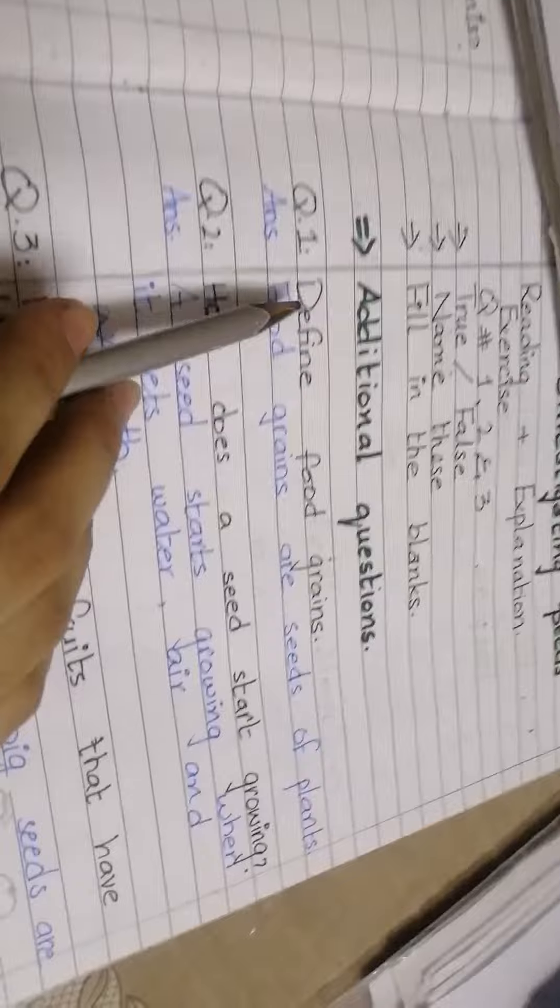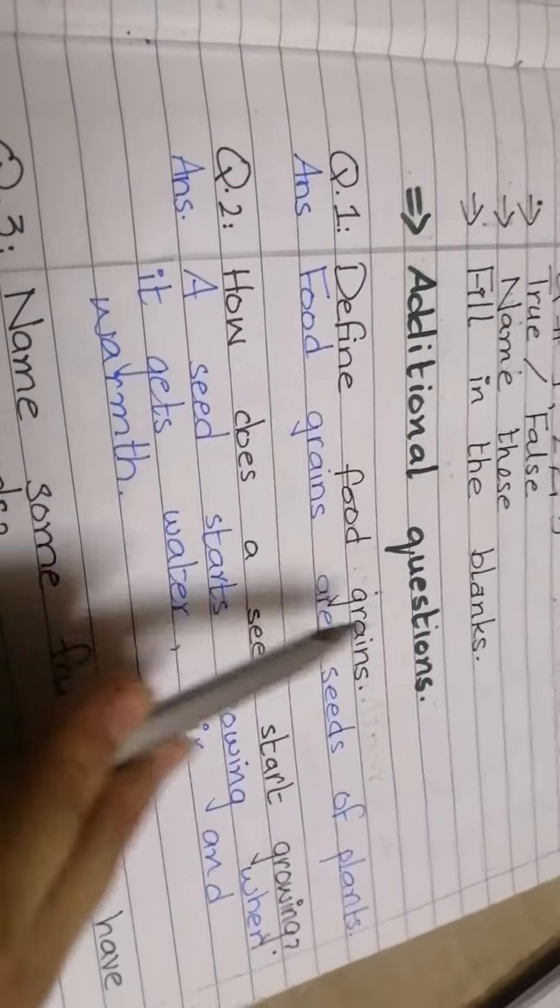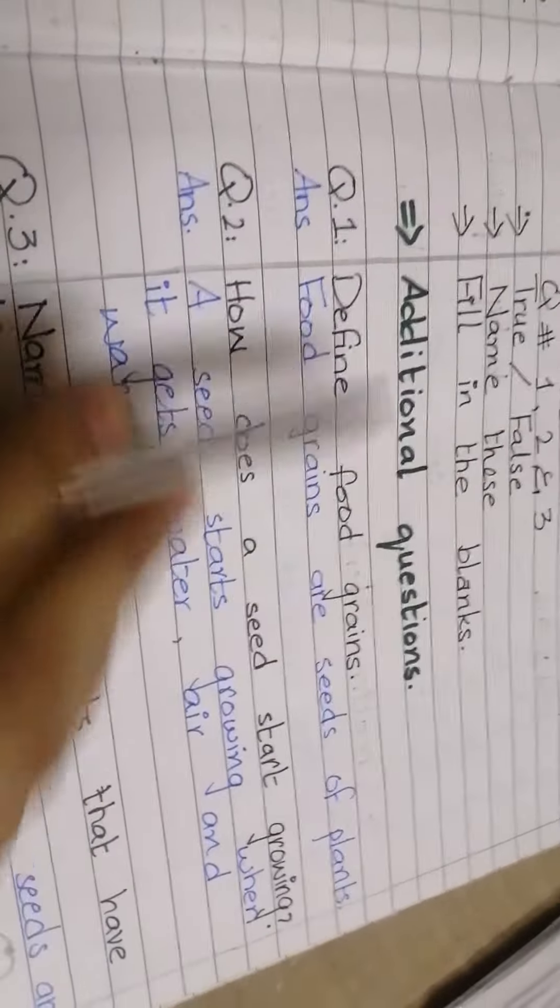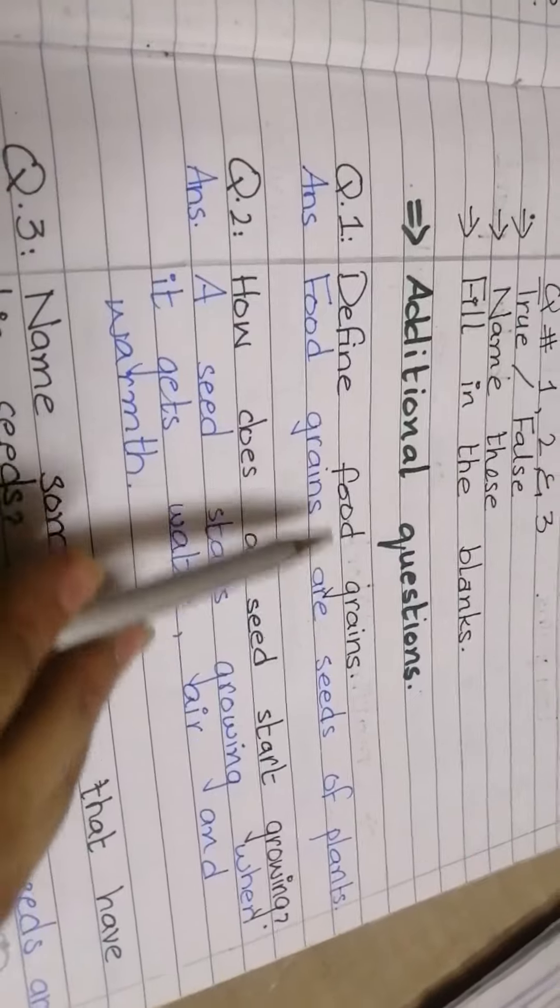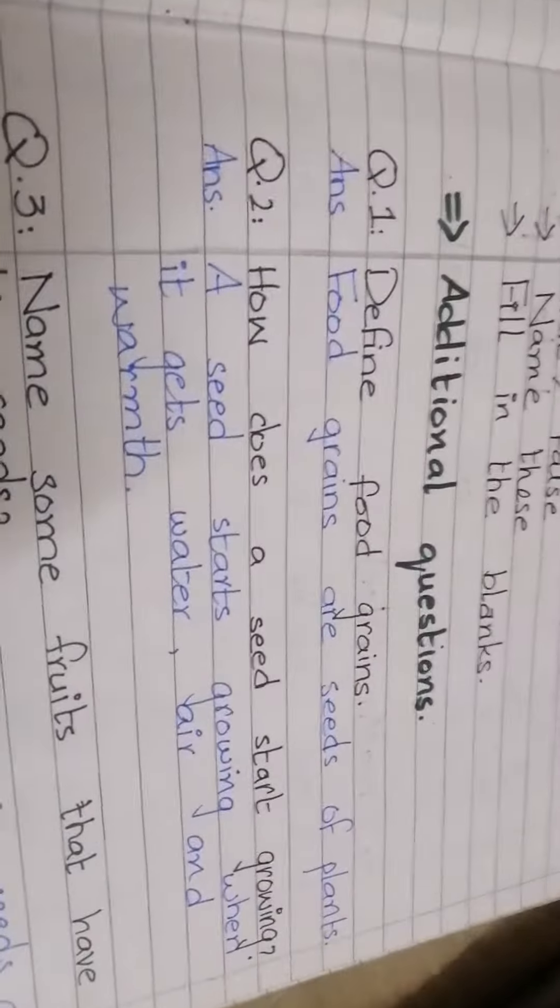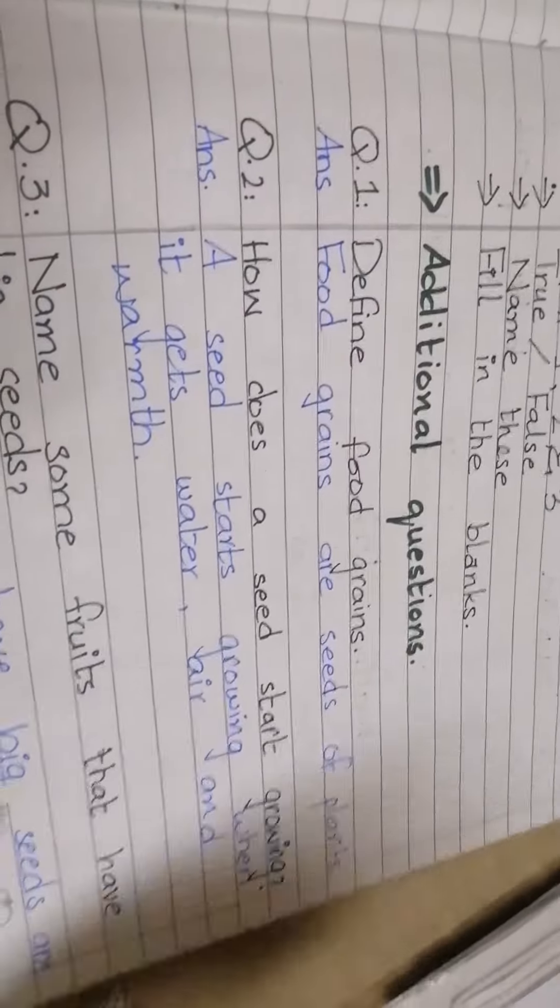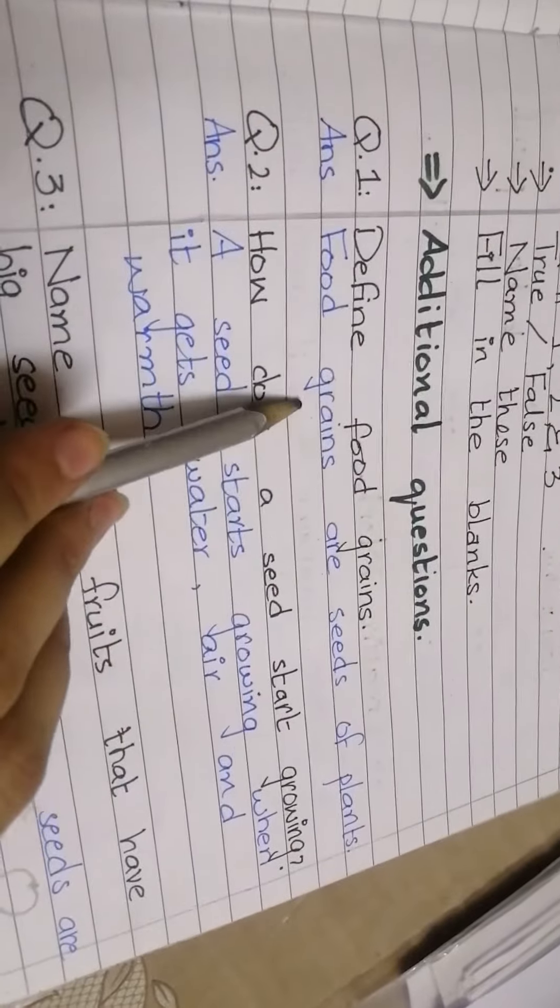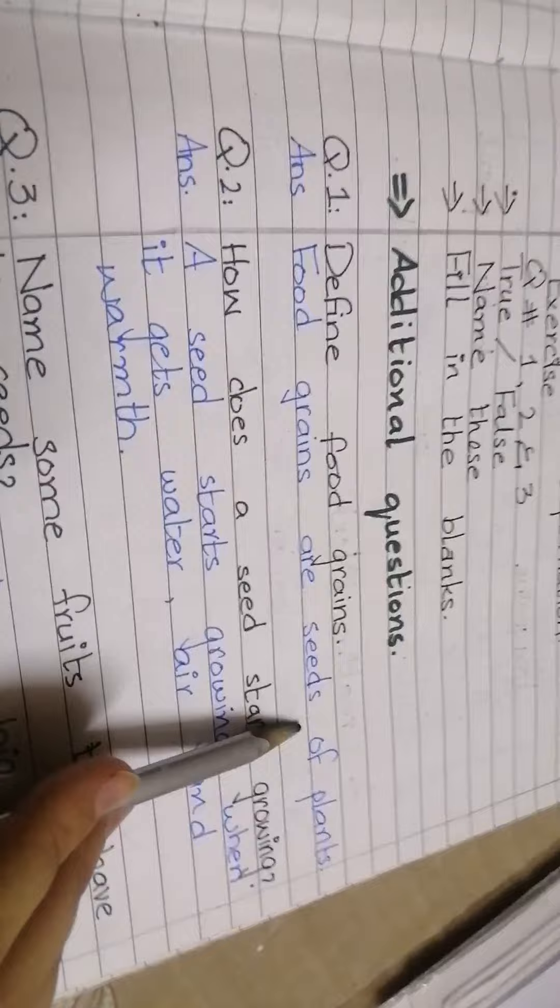Question number 1: Define food grains. Food grains are basically seeds of plants. We eat wheat, rice, and maize. Food grains are seeds of plants that we eat.